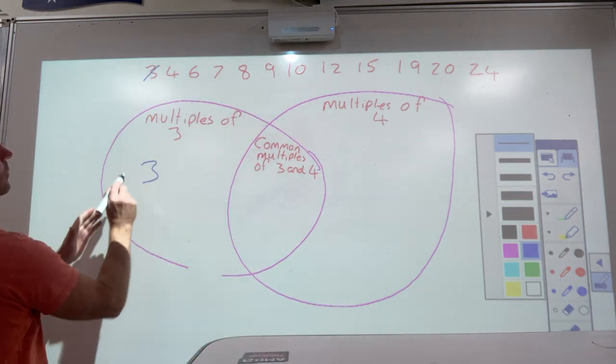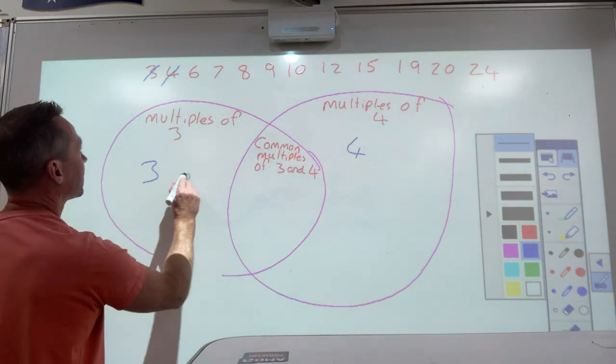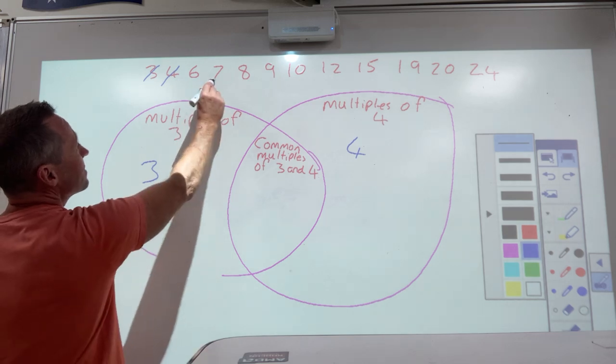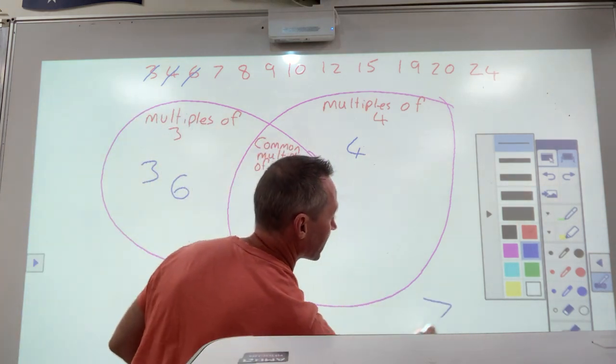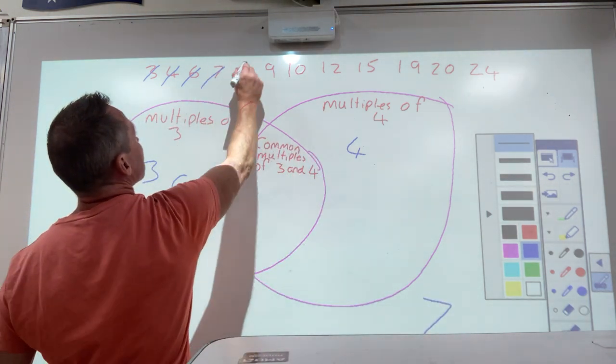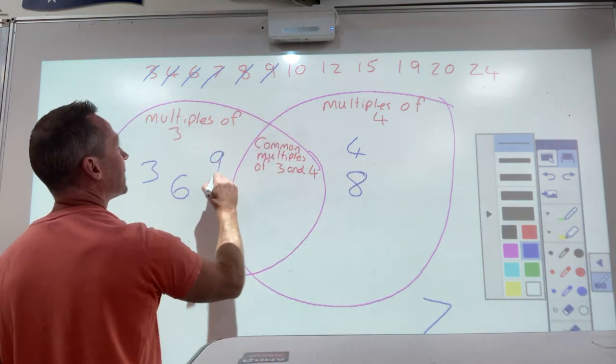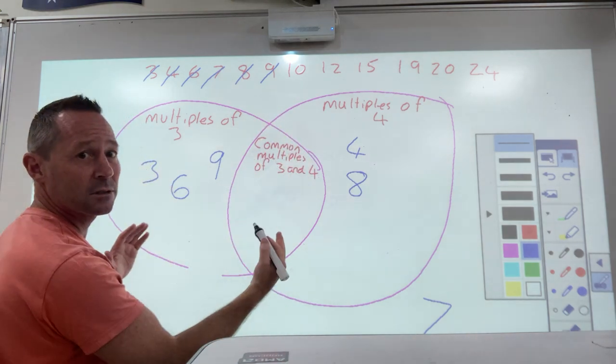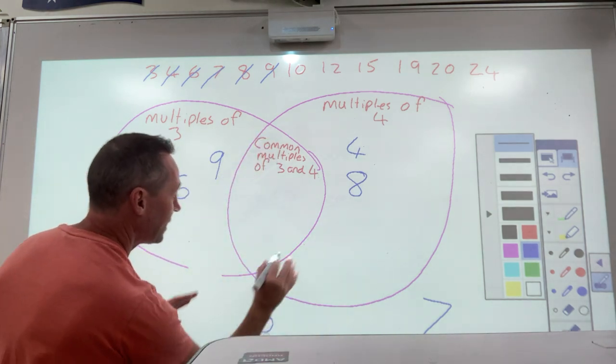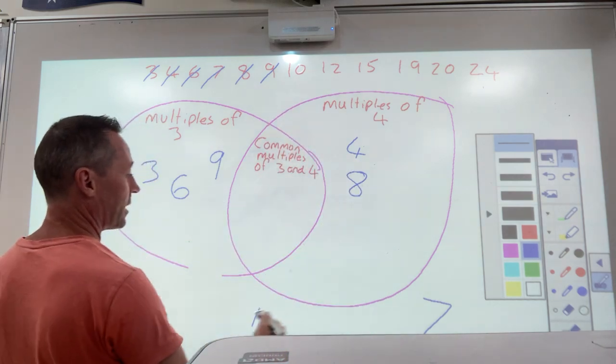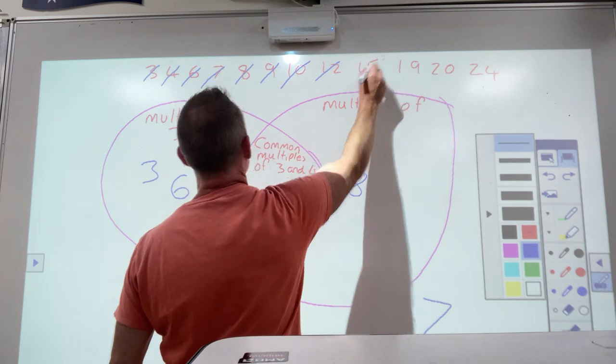And then if they don't actually fit into here, here or here, they just go around the outside. So let's have a look at this. 3, 3 obviously going to put this one, 3. I'll put here, 3 goes into this one. 4 goes over here, cross that one out. 6, multiple of 3, goes in here. 7 doesn't fit into either of them, so that just stays here or I just put it somewhere around the outside.